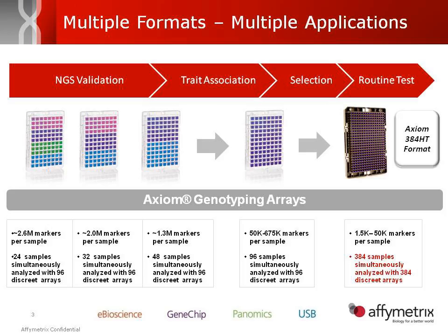The Axiom genotyping arrays are used in a broad range of applications that give you complete flexibility on both markers as well as samples. If you have markers discovered through next-gen sequencing for a plant or an animal, you can take those markers and put them on high-density arrays. These can be run on a diverse set of samples — you can run 1,000 samples and identify the polymorphic markers relevant to your population, the breed or cultivar you're working with. It's a nice way of validating NGS discoveries, helping you identify false SNPs and the most polymorphic markers for worldwide applications. You can also use a similar format for trait association or selection, which is where your typical GWAS studies come in.